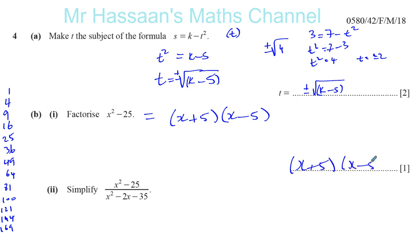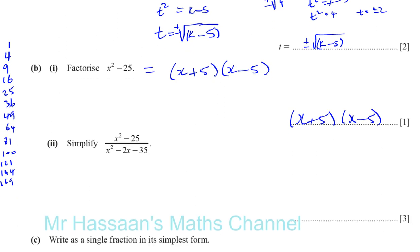If you want to check by multiplying out: x times x is x squared; x times minus 5 is minus 5x; 5 times x is plus 5x - so minus 5x and plus 5x cancel each other out; then 5 times minus 5 is minus 25. So it does give us what we started with. That's called difference between two squares factorization.